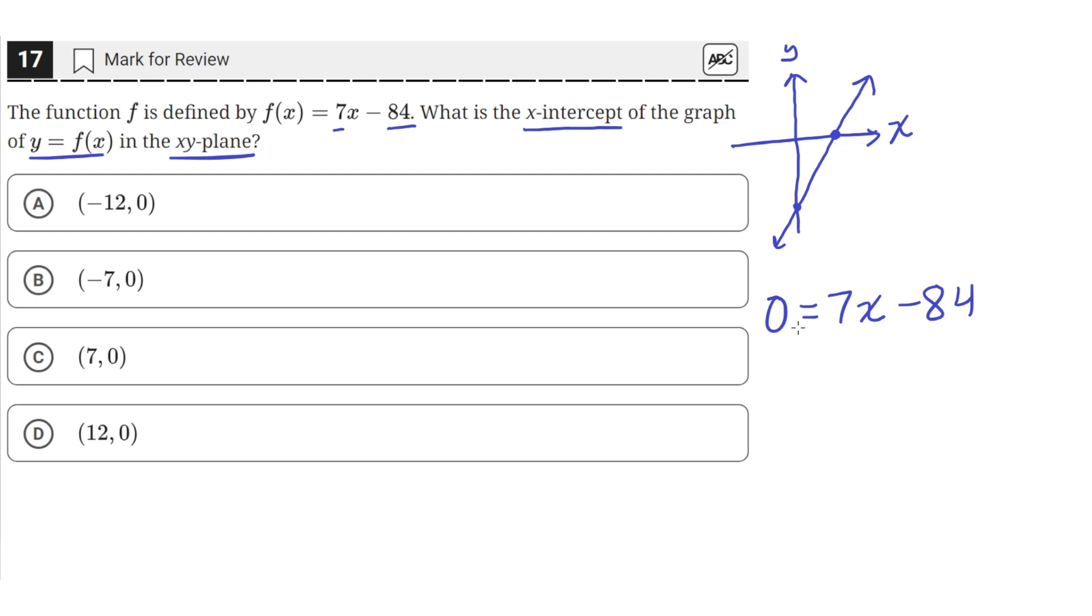So we'll move this 84 to the other side by adding 84 to both sides. So we'll have 84 equals 7x. And then we'll divide both sides by 7. And when we divide both sides by 7, this will just become a 1x.